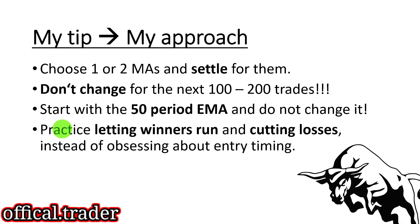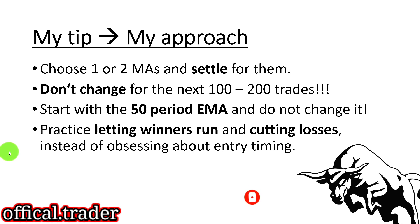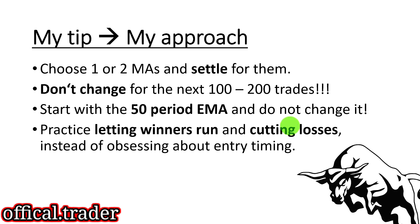My tip and approach — something that I and Moritz have been using and teach to our masterclass students — is to settle for one or two moving averages. Don't get too creative. Most importantly, don't change your moving average setting all the time. Start with the 50-period EMA and don't change it for at least 100 or 200 trades. When it doesn't work out, analyze when it works and when it doesn't, how to let winners run, how to cut losses — and don't obsess so much about entry timing.